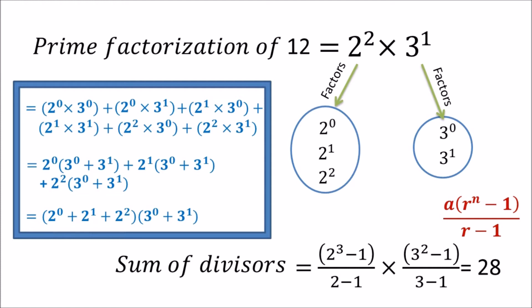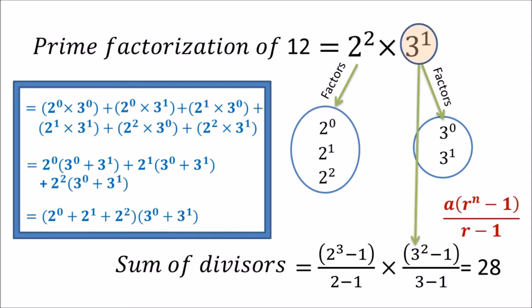Comparing with the prime factorization of 12, we see that 2 cubed has a power one more than 2 squared, which was the first prime factor. Similarly, adding 1 to the power of 3 gives 3 squared. This is how we correlate the sum of divisors with the prime factorization. Let's take one more example before we generalize.